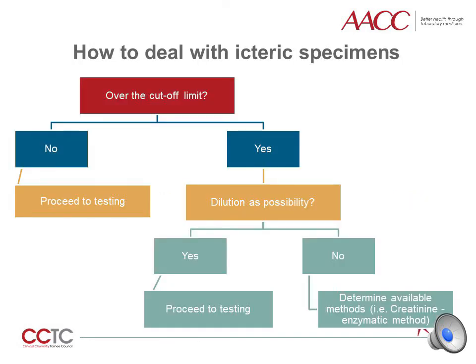One way to deal with an icteric specimen is to first determine if the I-index is above the icterus cutoff limit for the analyte of interest. If the I-index is not above the cutoff, you may proceed with testing. However, if the I-index is above the cutoff limit, determine whether you are able to dilute the sample by referring to the manufacturer guidelines. If dilution is acceptable, you may proceed to testing after diluting the specimen. If dilution is not acceptable, you will have to explore alternative methods — for example, using the enzymatic method rather than the Jaffe method for creatinine measurement.